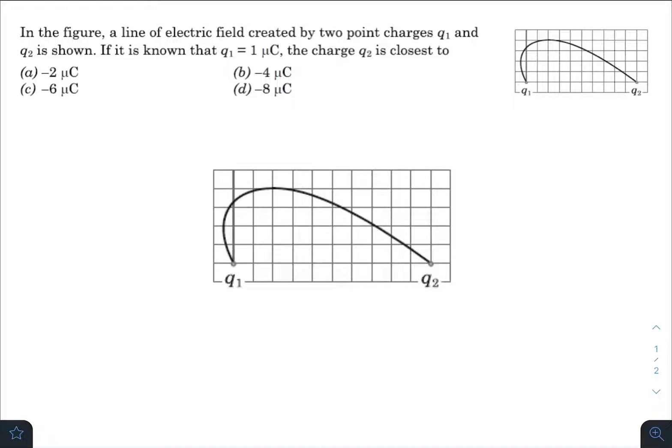What is up everyone, I hope all of you are doing great. In today's question, we have in the figure a line of electric field created by two charges q1 and q2 are shown. If it is known that q1 is one microcoulomb, then the charge q2 is closest to what? So this one is one microcoulomb.